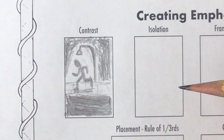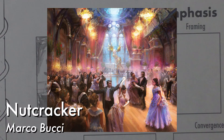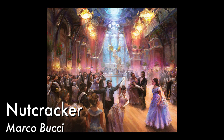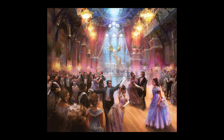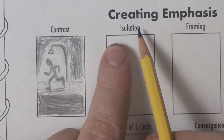Another way to create emphasis is to use isolation. To get an idea what that means, we're going to take a look at a digital painting by Marco Bucci — an illustration from the children's book rendition of Disney's Nutcracker and the Four Realms. You notice that the girl in the bottom right is all alone while everybody else is together with another person. That's a great way to create emphasis — a point that your eyes keep coming back to.